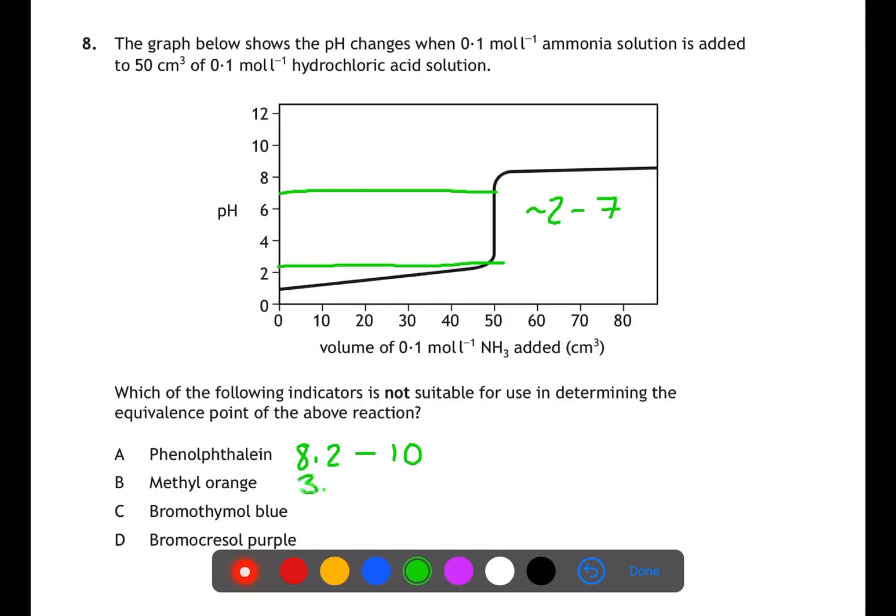By using the table in your data book you can find the pH range for each of the indicators named. Phenolphthalein ranges from 8.2 to 10, methyl orange 3.2 to 4.4, bromothymol blue 6.0 to 7.6 and bromocresol purple from 5.2 to 6.8. This means that phenolphthalein is out of the range of 2 to 7.